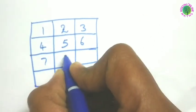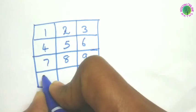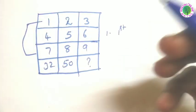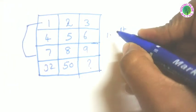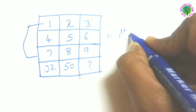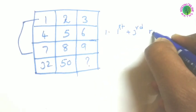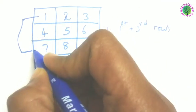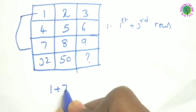Here we have to find the missing number. Logic of the puzzle is we have to add 1st and 3rd rows. Here 1 and 7 we have to add, so 1 plus 7 is equal to 8.